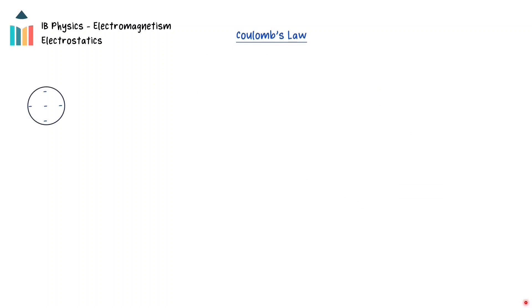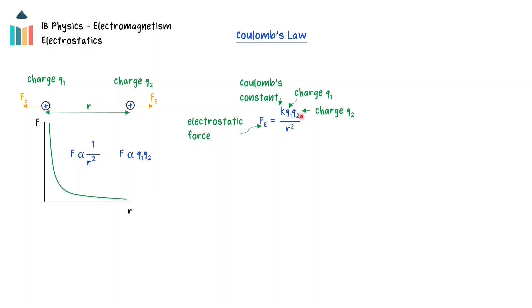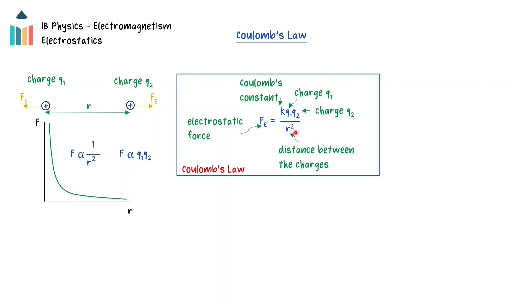The electrostatic force acting between two charged point sources can be explored using Coulomb's law. Often we will be dealing with charged objects that are spherical in shape. These objects behave the same as if all their charge were concentrated at the center of the sphere, allowing us to treat them as point charges of theoretically zero size. The electrostatic force between two point charges is inversely proportional to the square of the distance between the charges and directly proportional to the product of the magnitudes of the charges. This relationship is given by the formula: electrostatic force equals Coulomb's constant k times the magnitude of charge 1 times the magnitude of charge 2, divided by the distance between the charges squared. This is known as Coulomb's law.